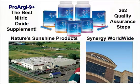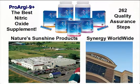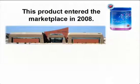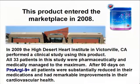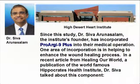There is a product that has been scientifically formulated to enhance the ability of your endothelium to create nitric oxide for enhanced circulation. It's called ProRx9+. This product entered the marketplace in 2008. In 2009, the High Desert Heart Institute in Victorville, California performed a clinical study using this product. All 33 patients in this study were pharmaceutically and medically managed to the maximum. After 90 days on ProRx9+, all patients were substantially reduced in their medications and had remarkable improvements in their cardiovascular health. Since this study, Dr. Siva Arunasalam, the Institute's founder, has incorporated ProRx9+ into their medical operation.